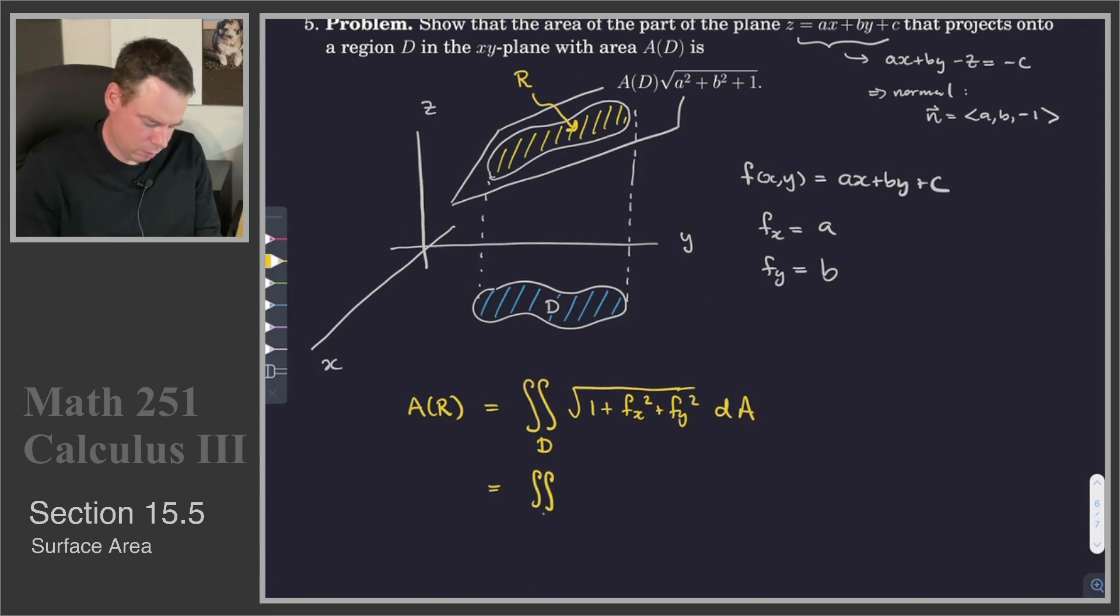That is, it's the integral over D of the square root of 1 plus a squared plus b squared dA. But this integrand is now a constant, so I can bring it out front. It's the square root of 1 plus a squared plus b squared, the integral D dA.